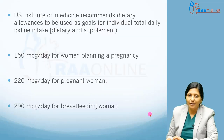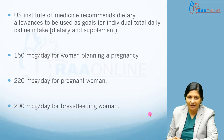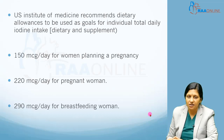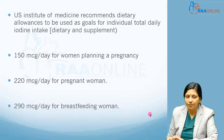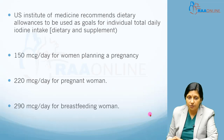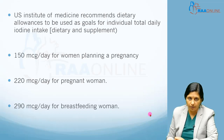The US Institute of Medicine recommends dietary allowances as goals for individual total daily iodine intake, both dietary and supplementary. For a woman planning pregnancy, 150 micrograms per day is the daily iodine requirement. For a pregnant woman, 220 micrograms per day, and for a breastfeeding woman, 290 micrograms per day.